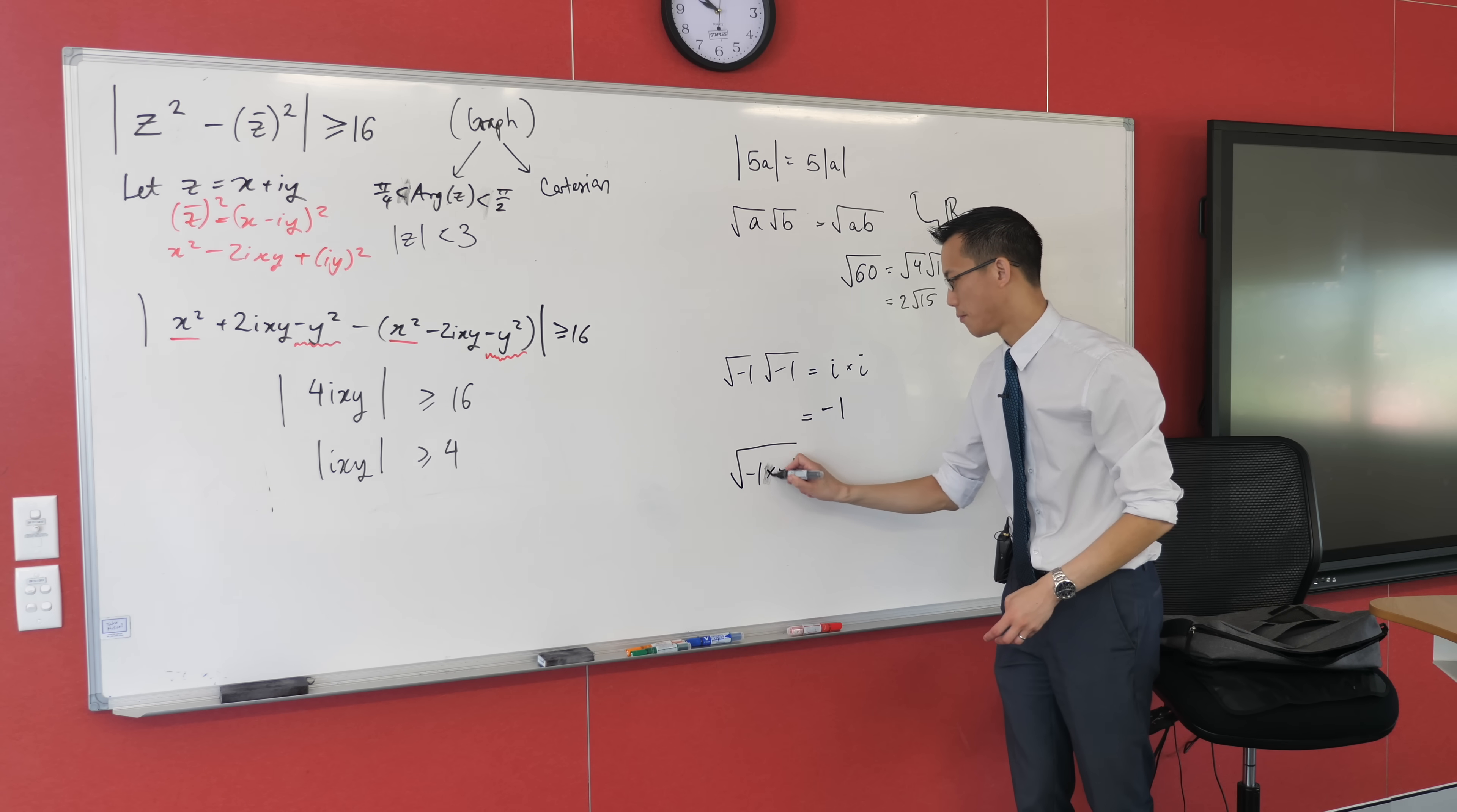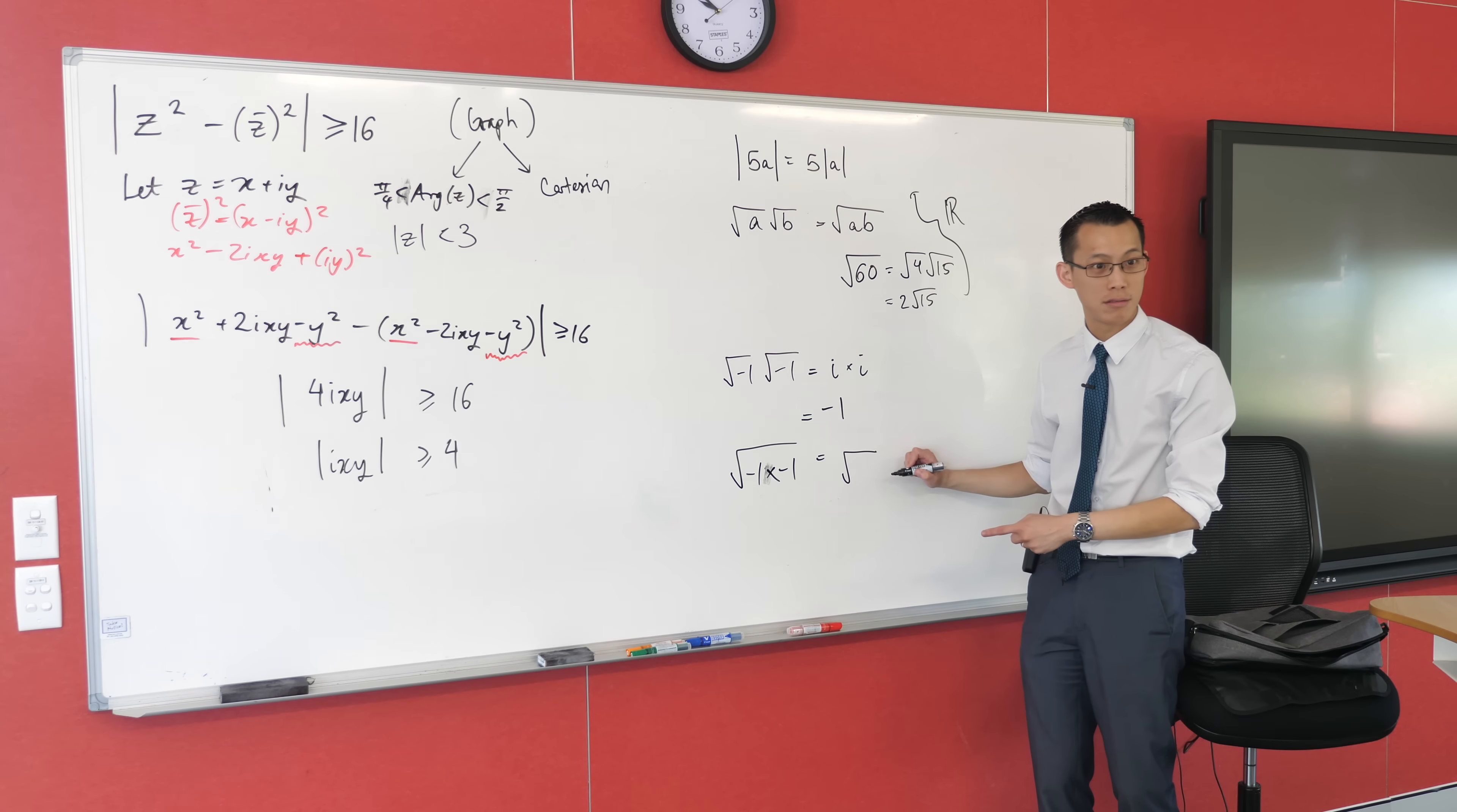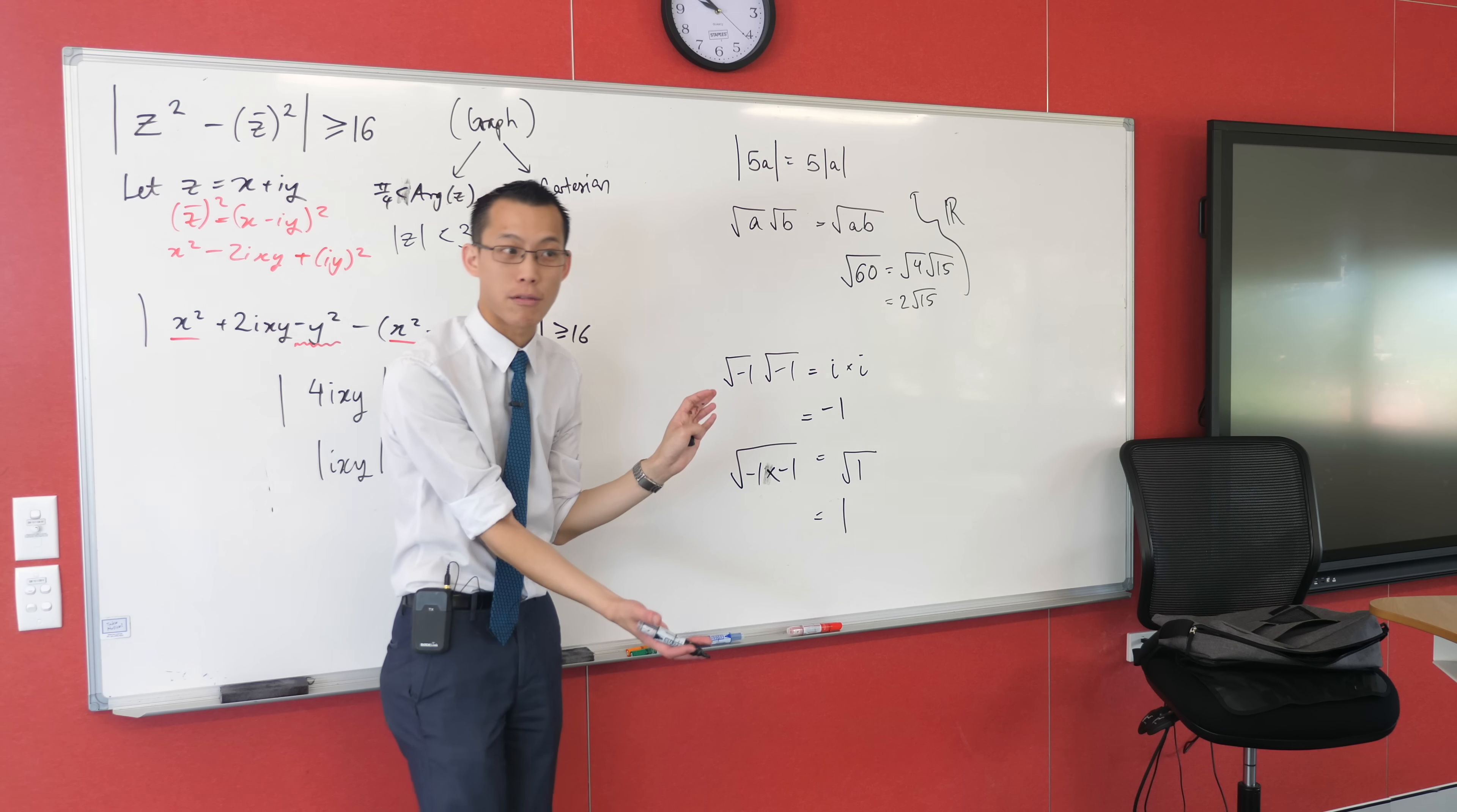This is my square root of a times b. Negative one times negative one, of course, is just one. You're like, whoa, what happened? And the answer is, this rule actually only works when a and b are both strictly positive. If we are willing to deal with complex numbers, suddenly things break down.